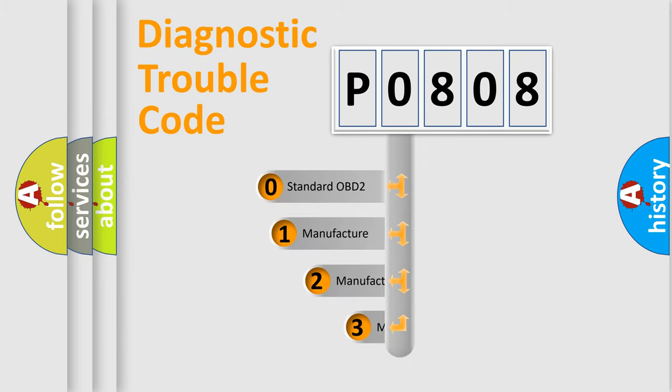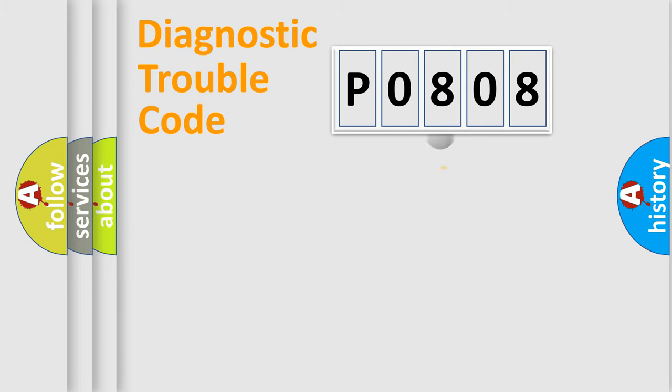If the second character is expressed as zero, it is a standardized error. In the case of numbers 1, 2, 3, it is a manufacturer-specific error.